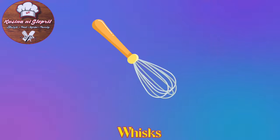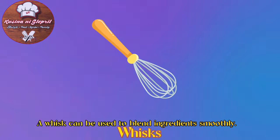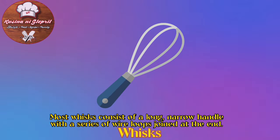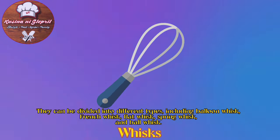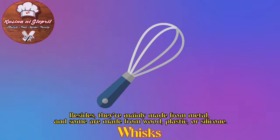Whisk: A whisk can be used to blend ingredients smoothly. Most whisks consist of a long, narrow handle with a series of wire loops joined at the end. They can be divided into different types, including balloon whisk, French whisk, flat whisk, spring whisk, and ball whisk. They are mainly made from metal, and some are made from wood, plastic, or silicone.